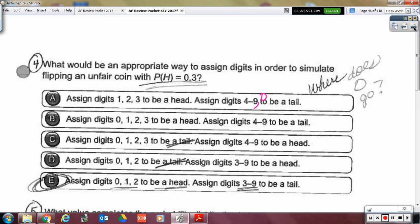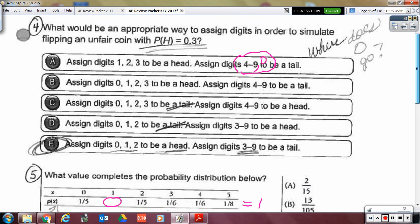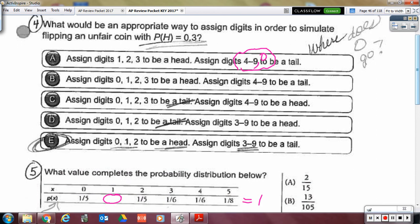Okay, on this number four, you had to assign the correct number of digits. A is close because, but it's missing zero. It did not have enough assigned to the tails. E is correct because it has three digits assigned to heads and seven digits assigned to tails.